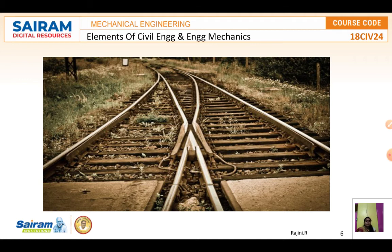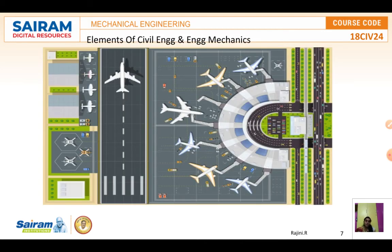Coming to railways, the track should be aligned properly from one point to the last point, and the rails installed must maintain the same width throughout. Engineers must adopt different technologies here. Maintenance of railway lines is also an important task for civil engineers — not just construction, but maintaining things as well.